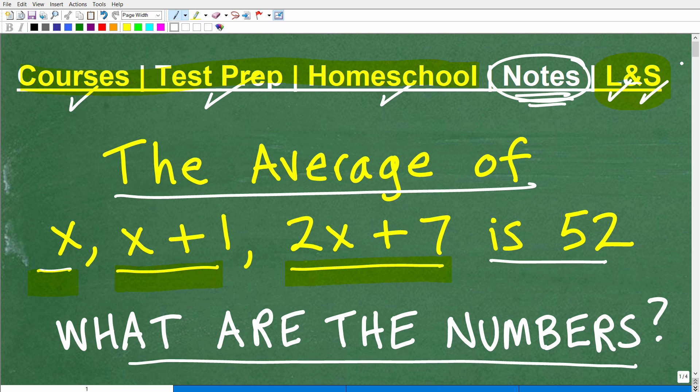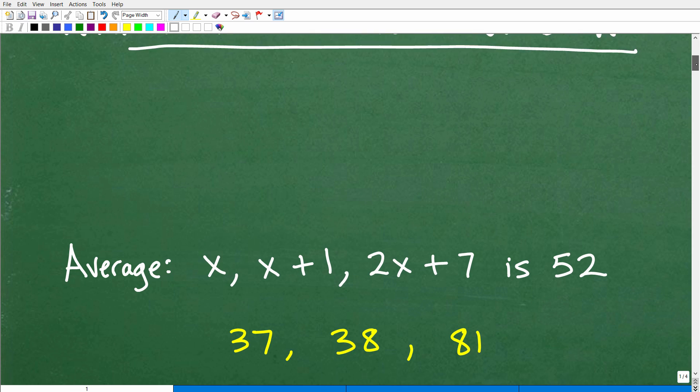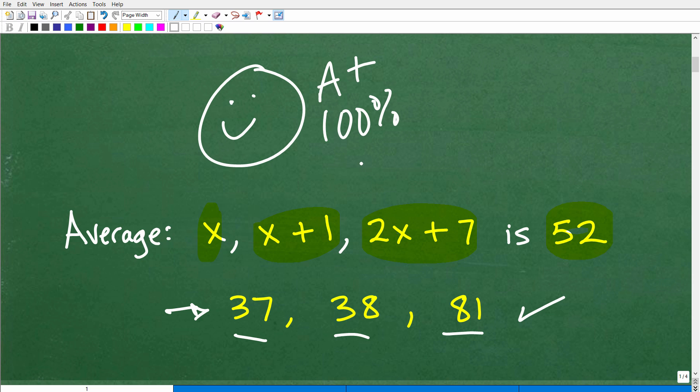Okay, so let's go ahead and take a look at the answer to this problem. And then I'm going to show you exactly how we find that answer. So we have the average of these three mystery numbers, x, x plus 1, 2x plus 7. We just know that the average of these three numbers is 52. What are the numbers? Here they are right here: 37, 38, and 81. Okay, so how did you do? If you got this right, pretty impressive. Matter of fact, impressive enough for you to get a nice little happy face, an A plus, a 100 percent. And because we are in the holiday season, I'm going to give you multiple stars. Just multiple stars. Let's just load them on there so you can have an extra, extra special day.